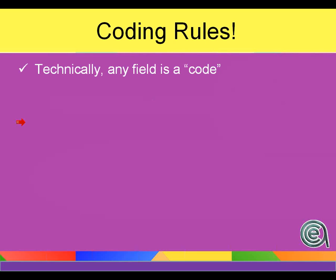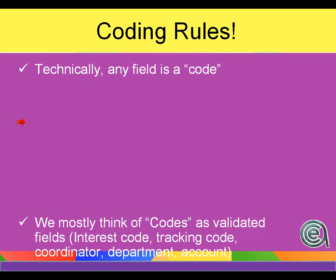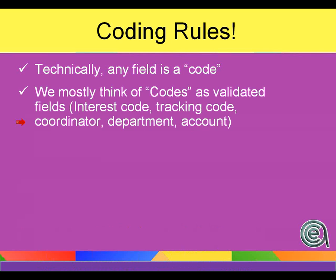Technically, any field in Student Manager — any data field: the name, the course, the register, the pay — is a code. We typically think of codes as fields in the screens that are validated. You have the drop-downs that you're entering and inputting particular data.